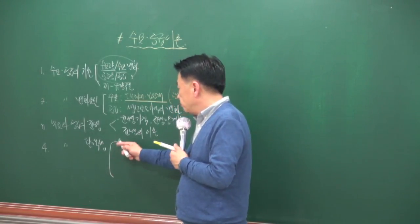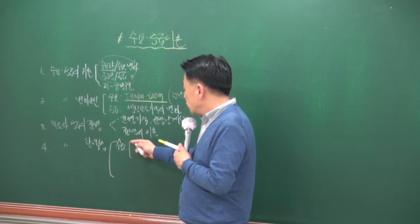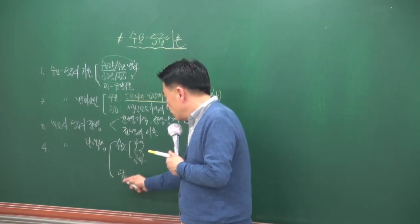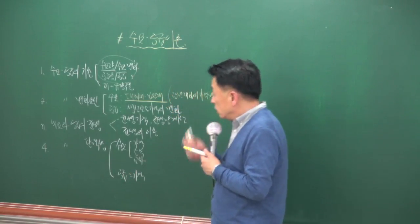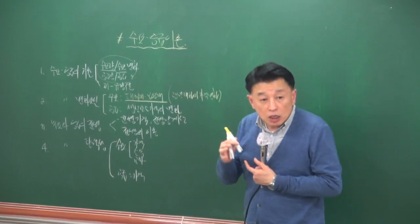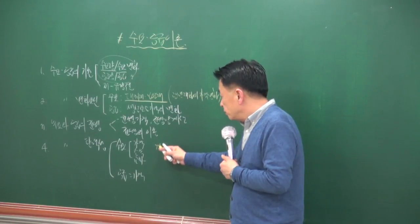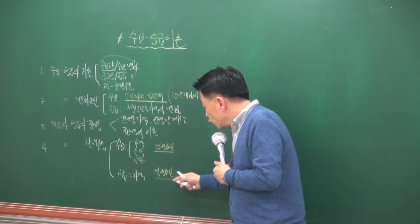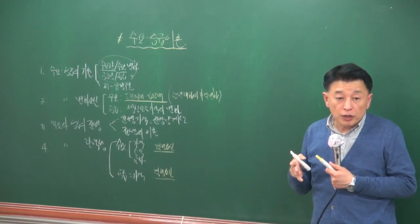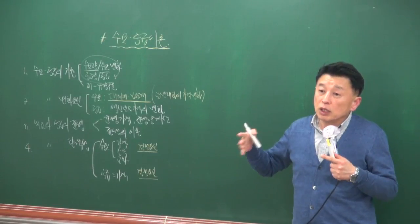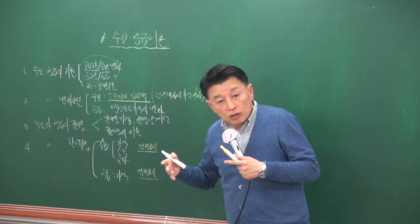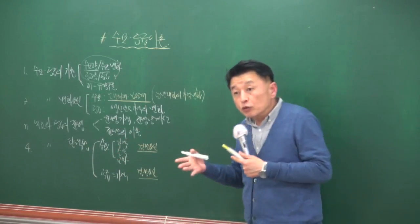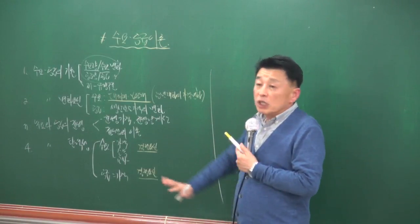탄력성에서는 수요의 가격 탄력성, 소득 탄력성, 교차 탄력성이 있고, 공급은 가격 탄력성만 있습니다. 계산 문제 하나와 탄력성에 영향을 주는 요인을 묻는 문제가 출제됩니다. 수요의 가격 탄력성에 영향을 주는 대표적인 요인은 대체재로, 대체재가 많을수록 탄력적이고 기간이 길수록 탄력적입니다. 이론을 잘 정리하면 눈으로만 다 맞출 수 있습니다.